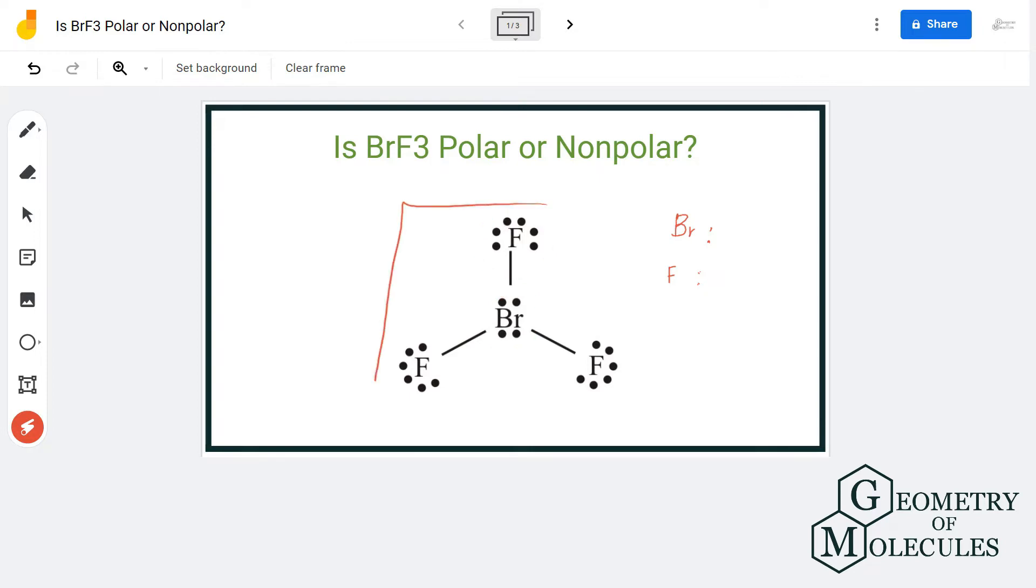Here is the Lewis structure. Each fluorine atom shares one electron of bromine to complete its octet, which results in two non-bonding pairs of electrons on the bromine atom.